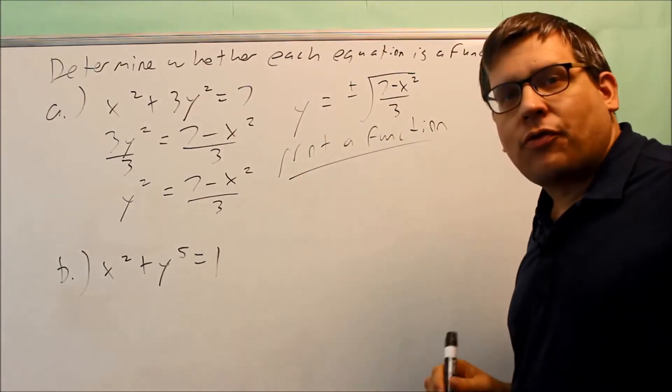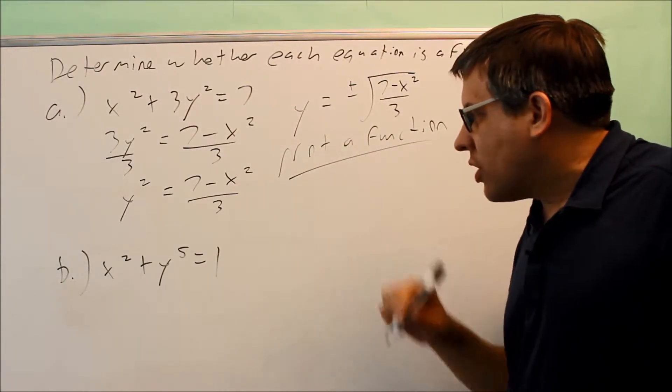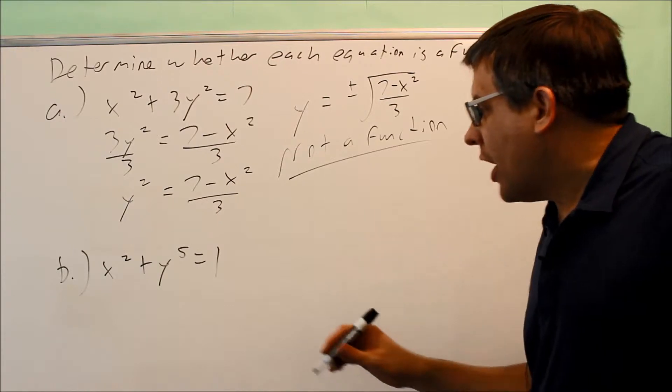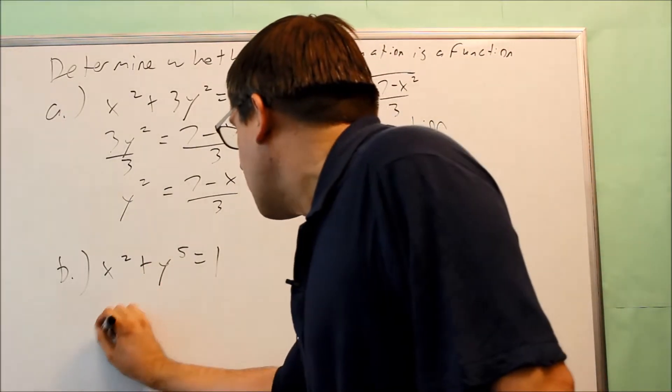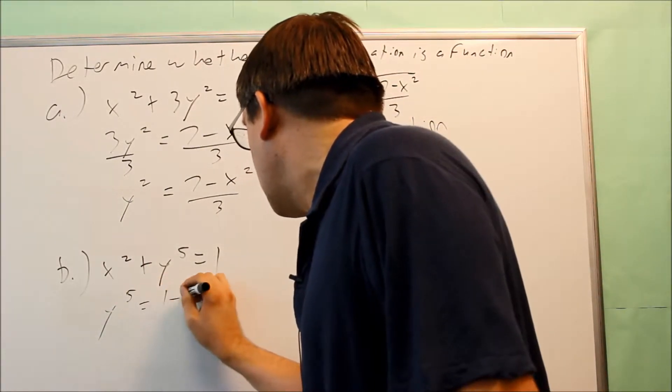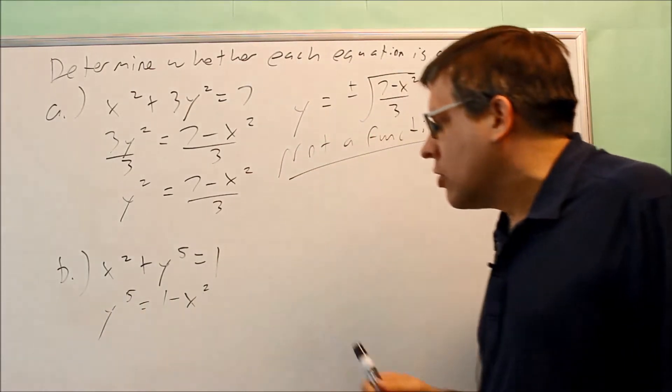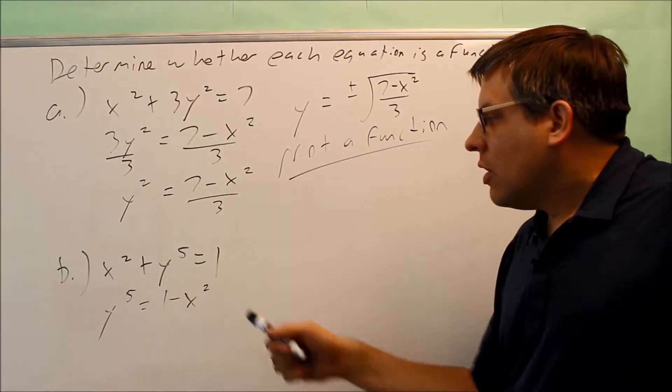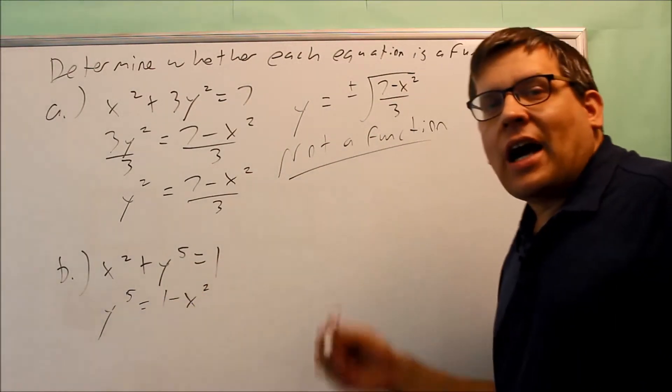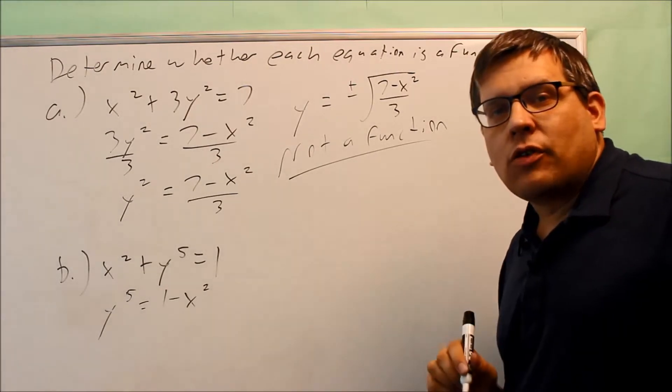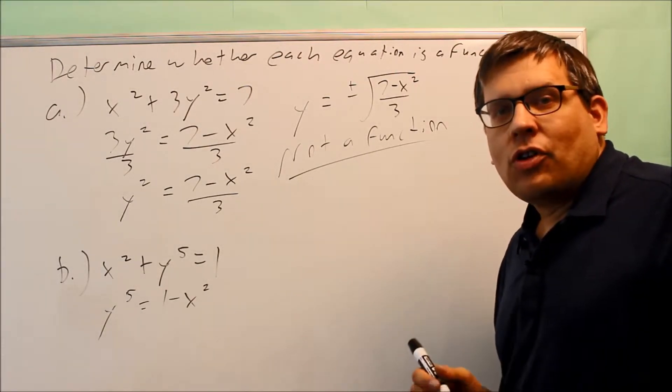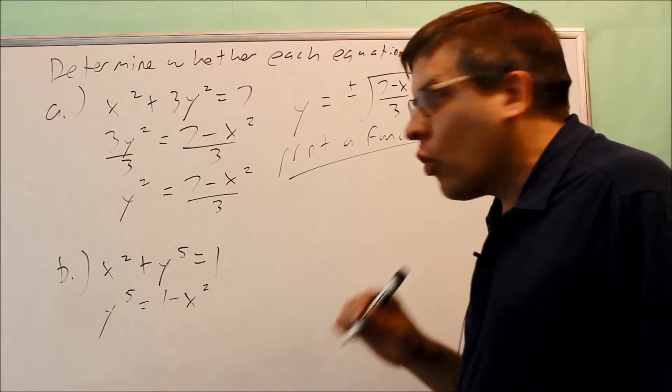So let's do the same thing for part b. Once again, we want to solve this one for y. So I'm going to subtract x squared to both sides. So it becomes negative here. Now this time, I'm taking an odd root of something. When you take an odd root of something, you do not have the plus or minus on it. You're only going to get one answer.